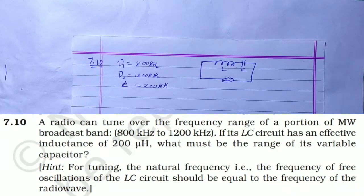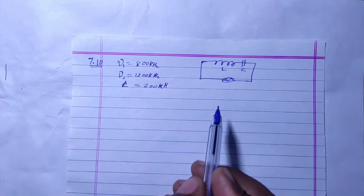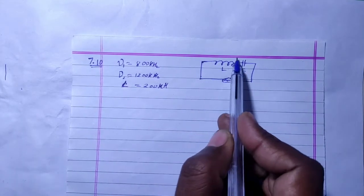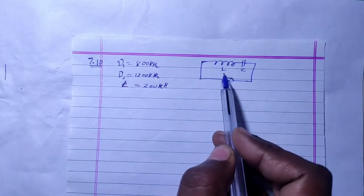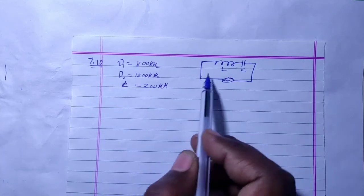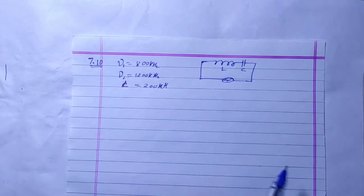For tuning, the natural frequency, that is the frequency of the free oscillation of LC circuit, should be equal to the frequency of the radio wave. So tuning will occur when this LC circuit oscillation frequency is equal to the radio wave frequency.